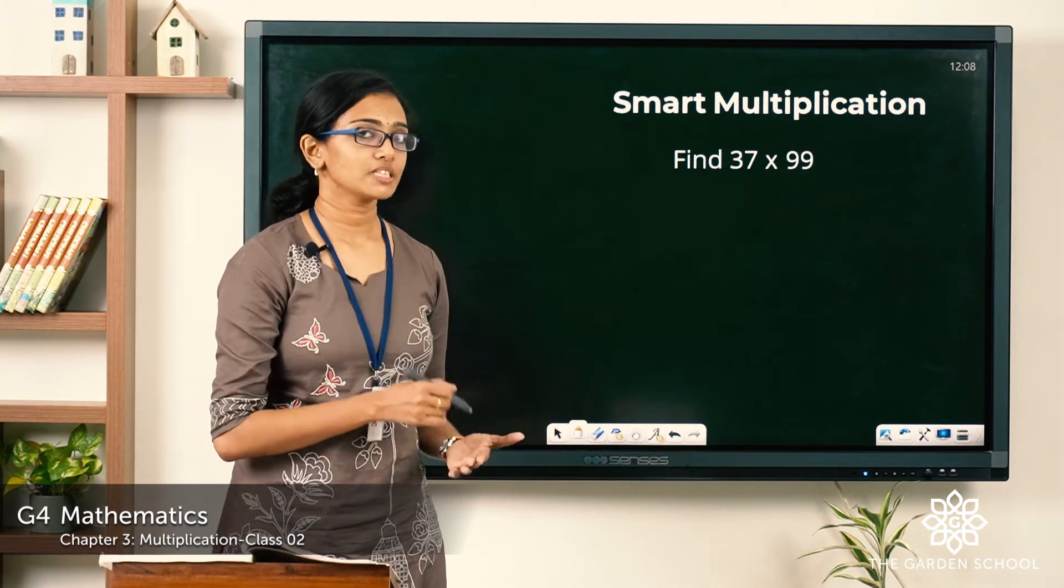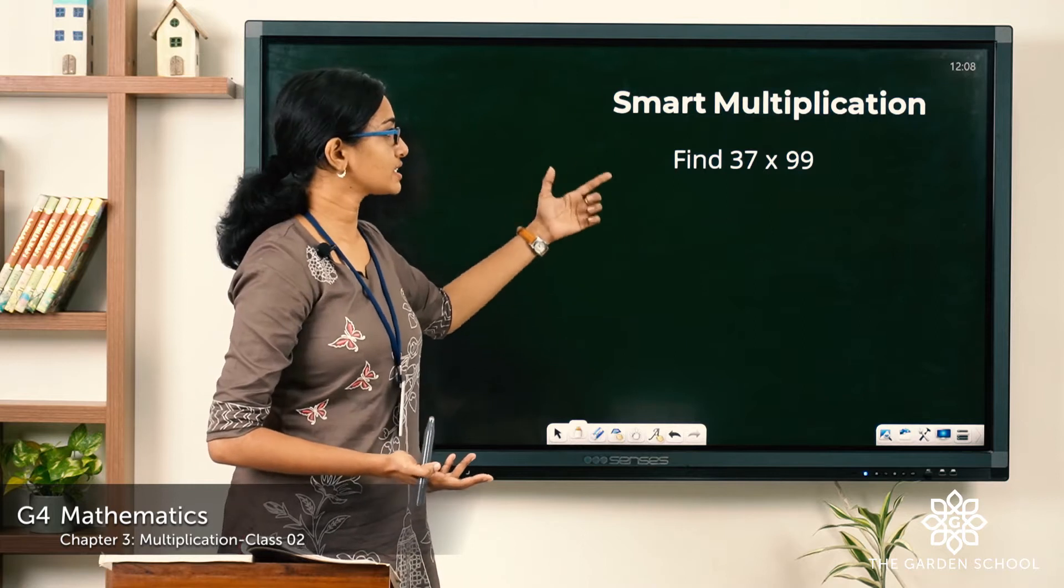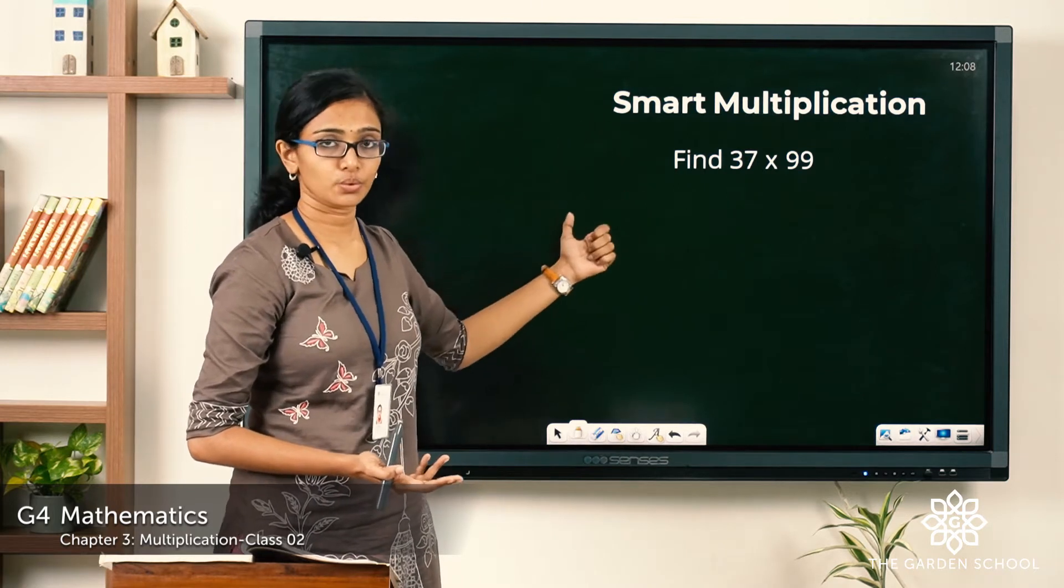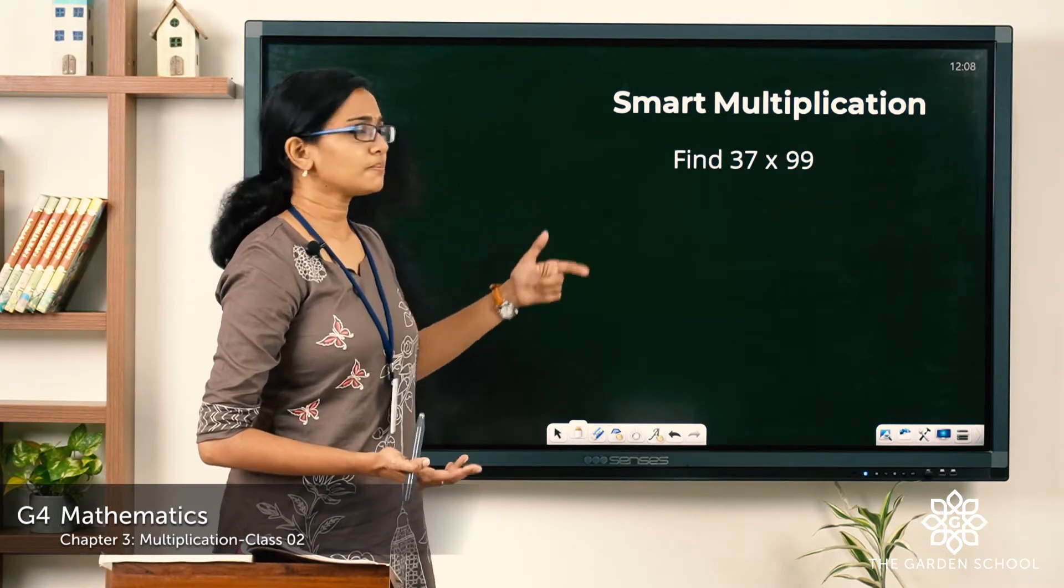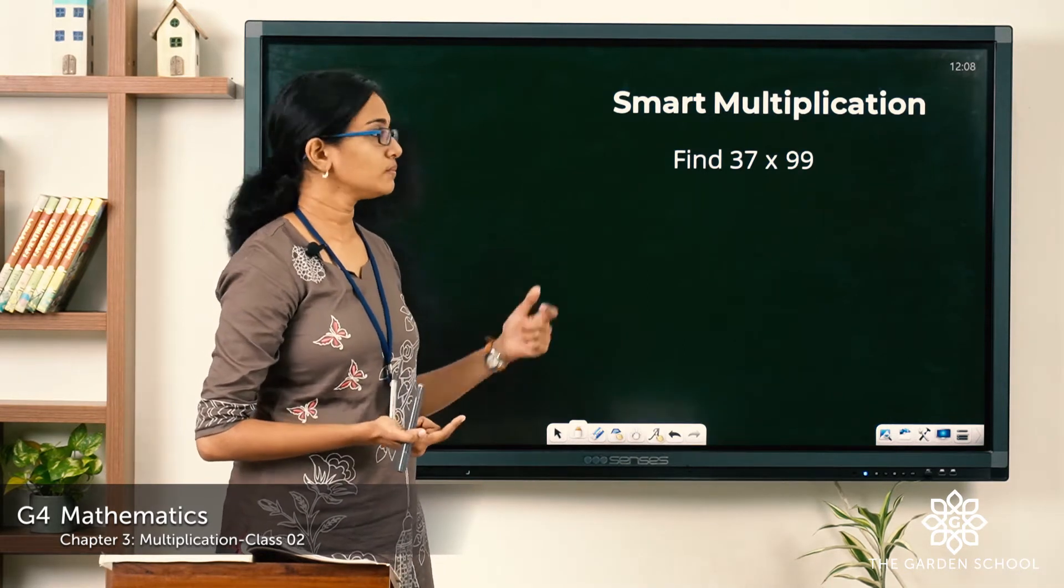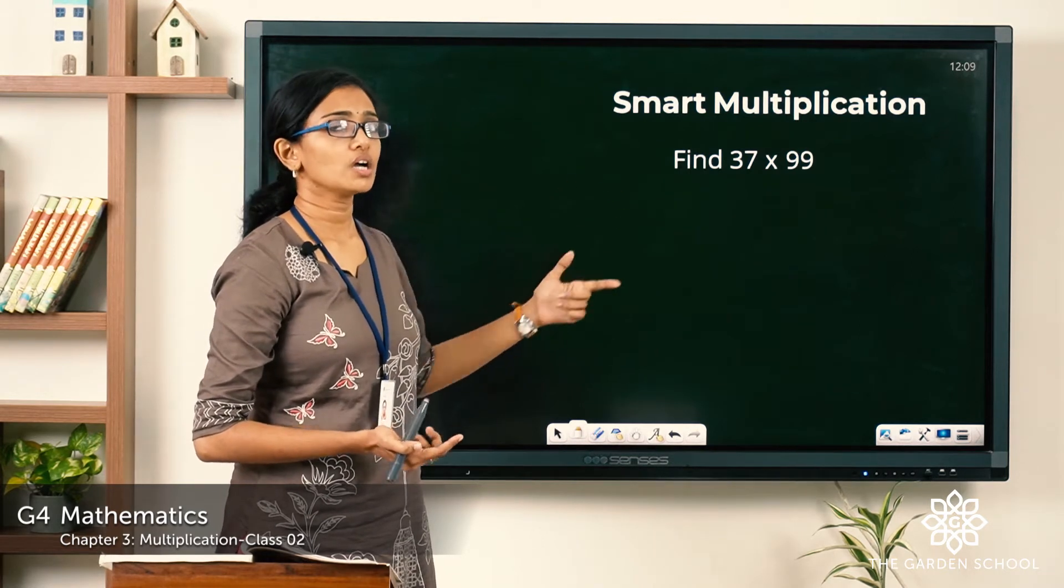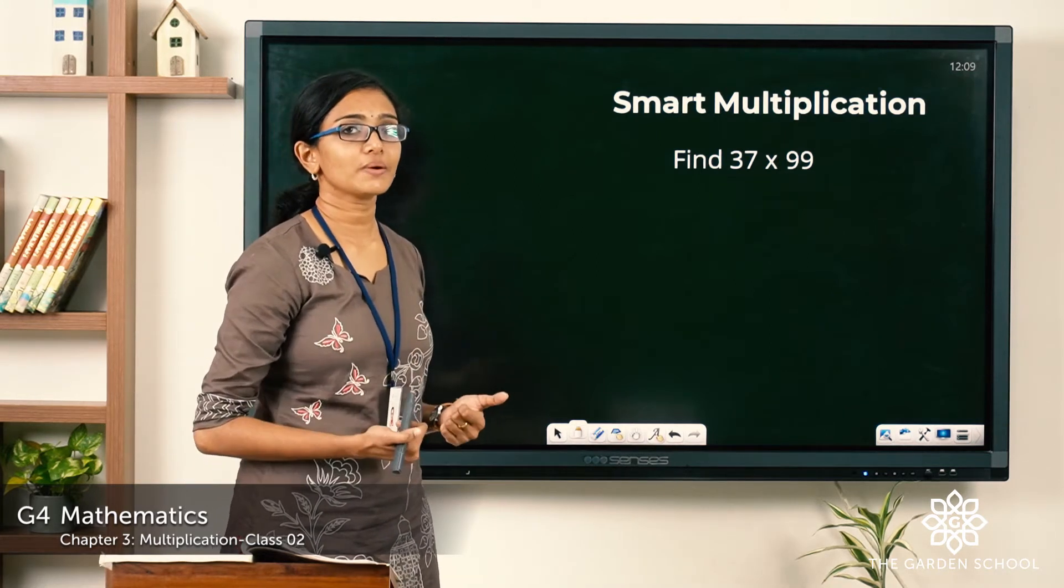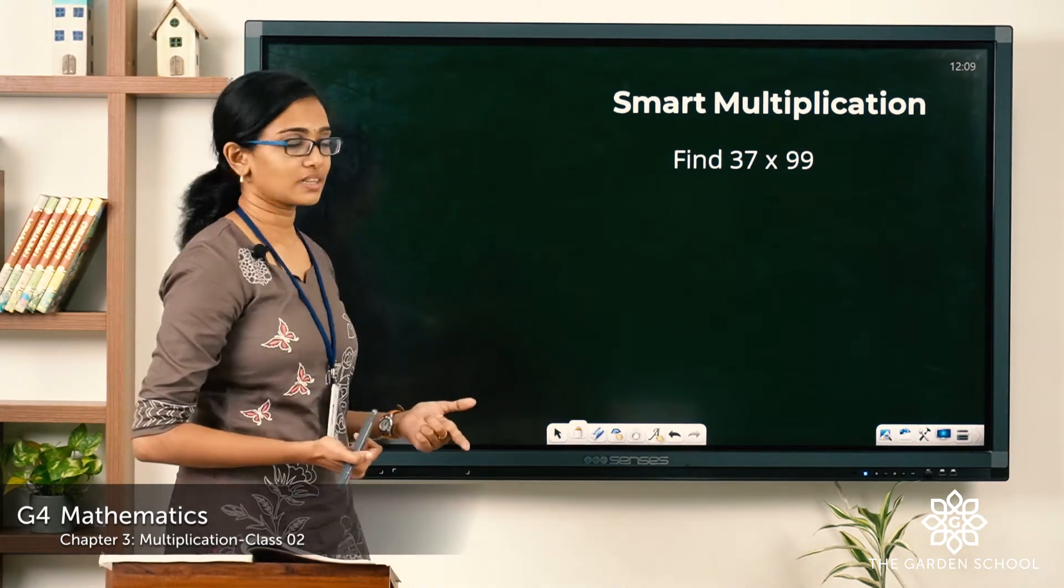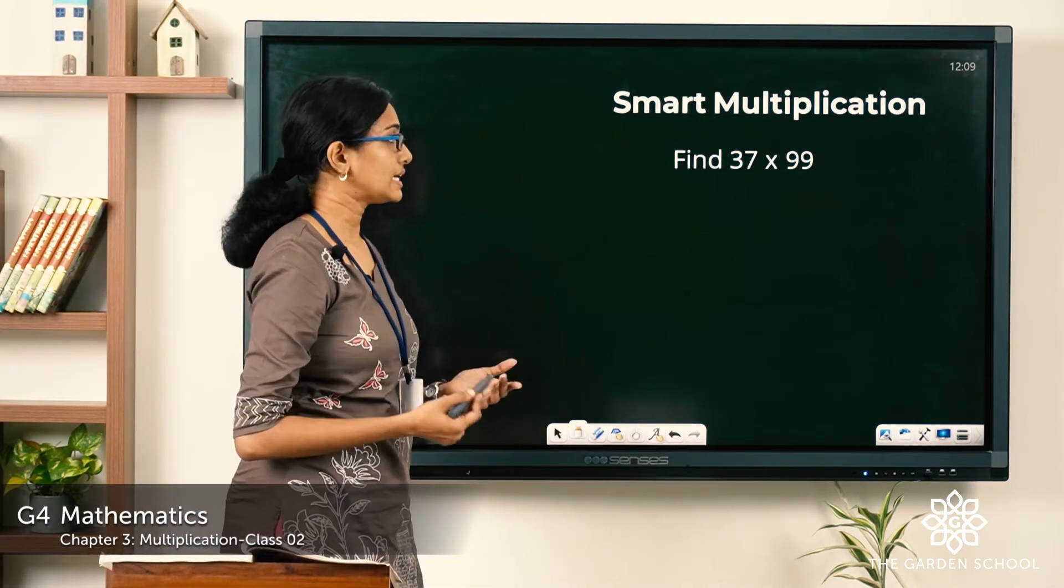You have learned about multiplication and how to multiply two numbers. So look at this example: find 37 into 99. A two digit number multiplied by a two digit number. It might take a little bit of time to actually find the product of this multiplication. What if we have some shortcuts to find the answer easily and quickly? Let's see one such method now.